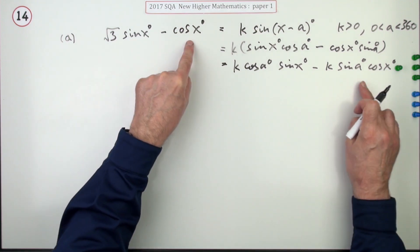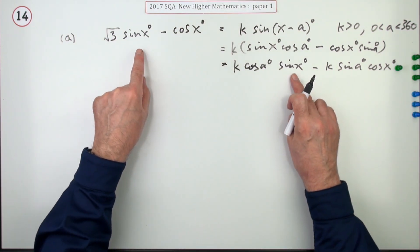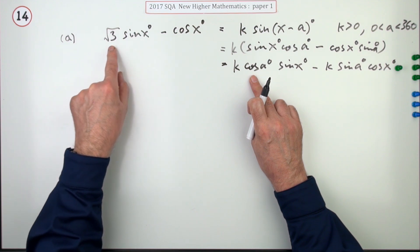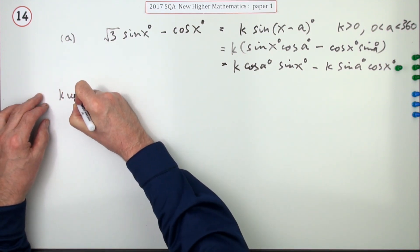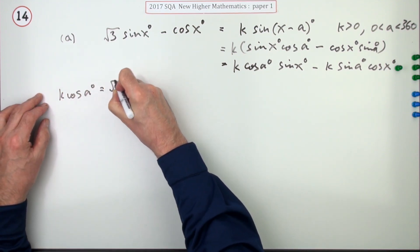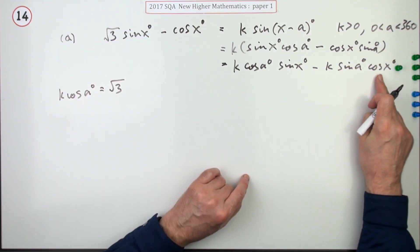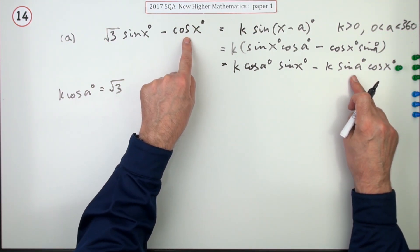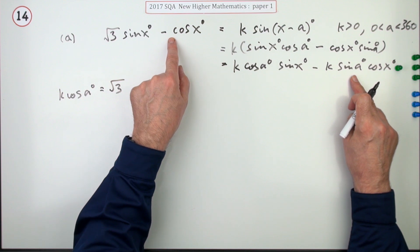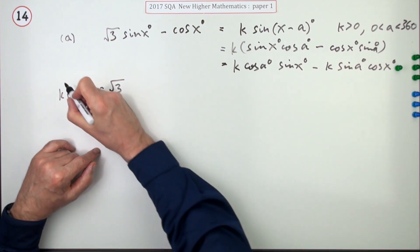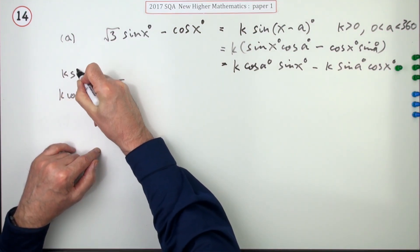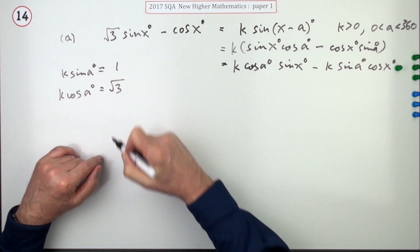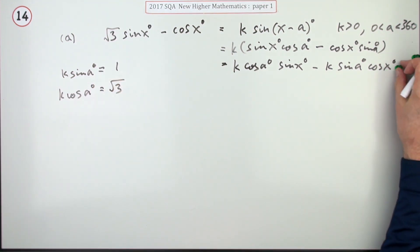The next step is to compare coefficients on both sides. The sine x term has k cos a, and the original sine x term has root 3, so k cos a = √3. The cos x term has negative k sin a, and the original cos x term has negative 1, so −k sin a = −1, or you can just drop the negatives. That gives you the second mark.